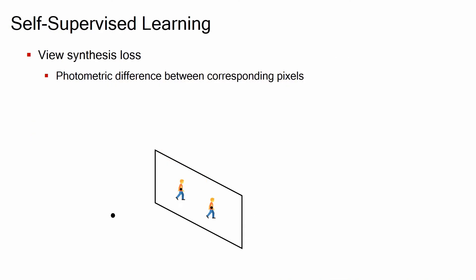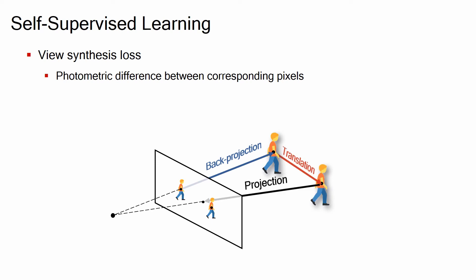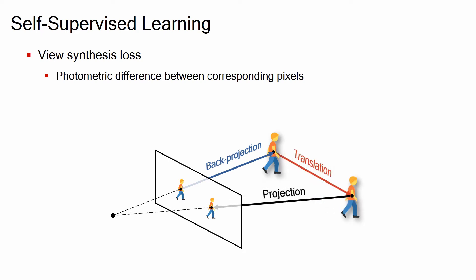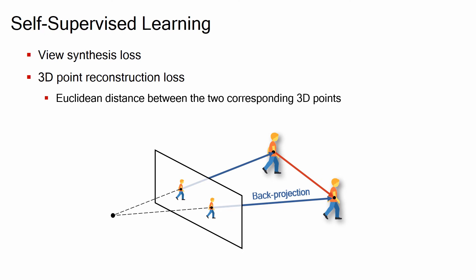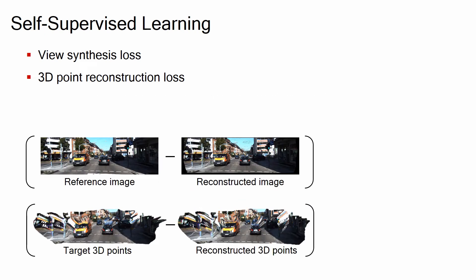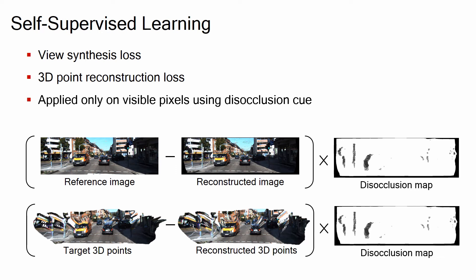We adopt self-supervised learning and introduce two novel losses. First, we propose a view synthesis loss that penalizes the photometric difference between corresponding pixels, which guides the network to estimate a combination of depth and scene flow that matches the corresponding pixels. Second, we propose a 3D point view reconstruction loss that penalizes the Euclidean distance between the two corresponding pixels. We only apply these losses on visible pixels where the correspondence should hold, and obtain the occlusion mask by using backward scene flow.